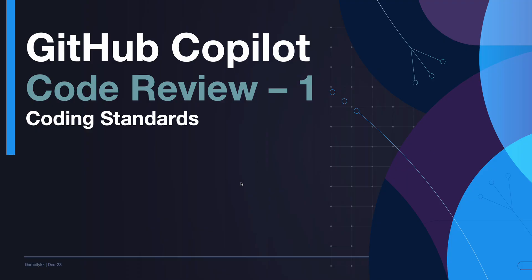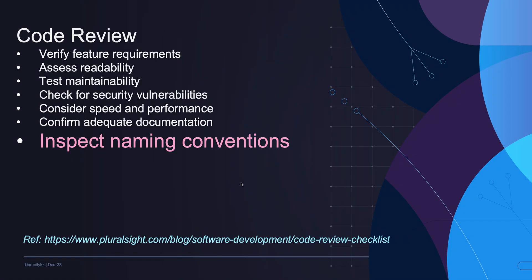For this particular video, I am using the code review checklist defined by FloralSight. As per FloralSight, the code review comprises of verifying the feature requirements, the readability aspect, whether it can test maintainability elements, security and performance, whether we have adequate documentation, and the last one is inspecting the naming conventions — that's the coding standards. Today we will look at the naming convention or coding standard element, and subsequent videos will cover the remaining areas.